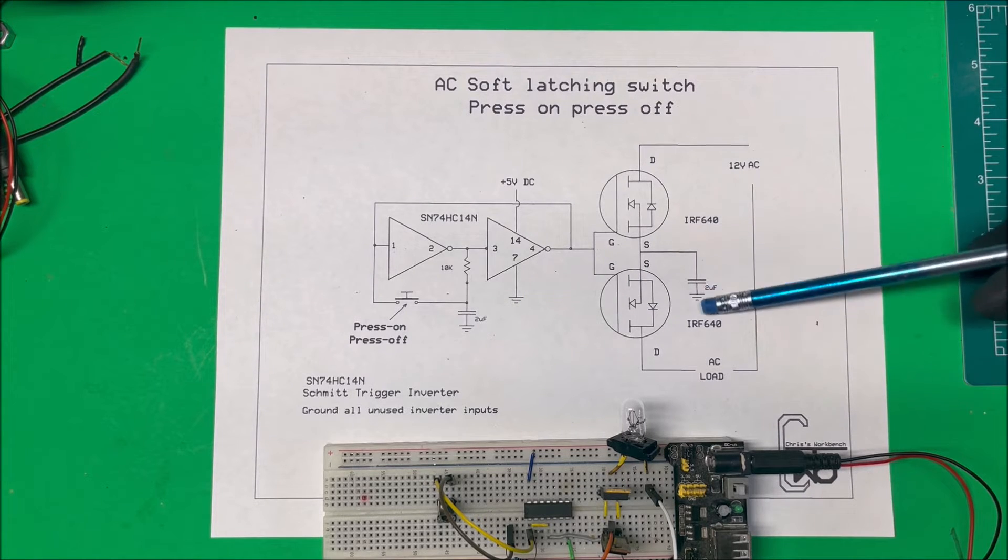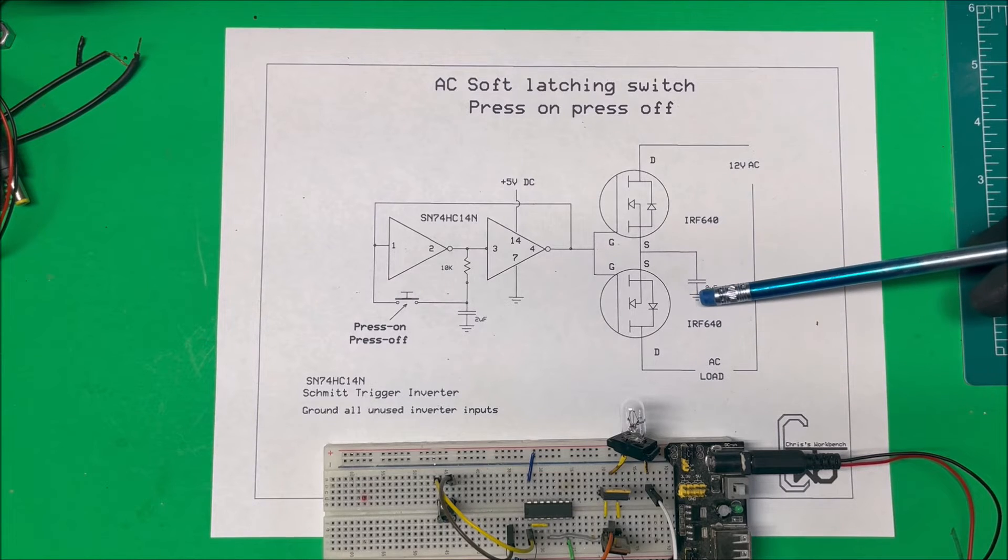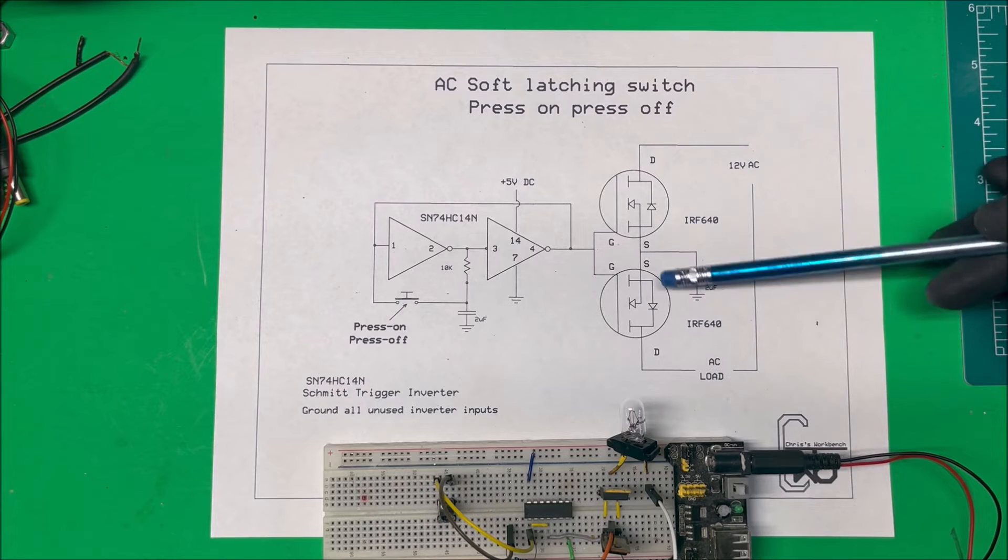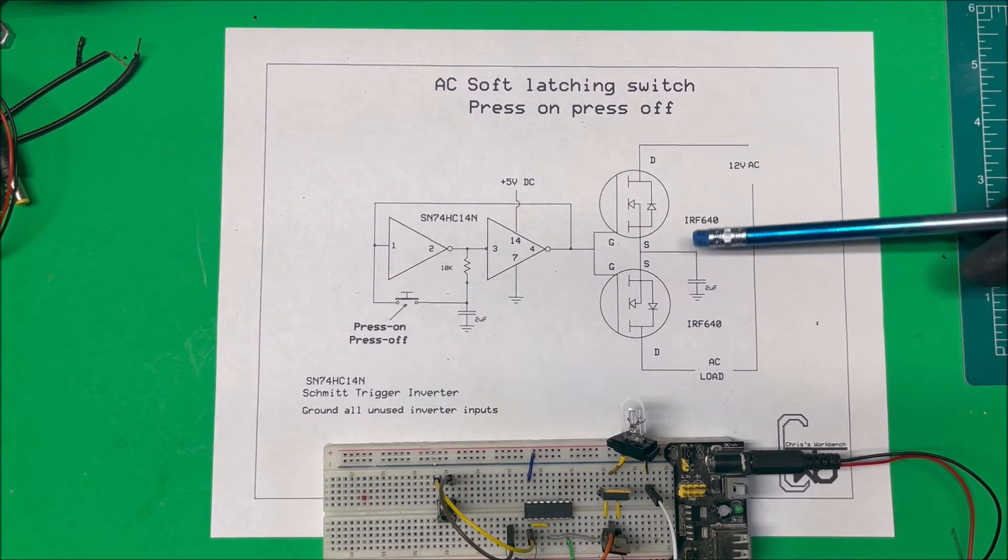Now you can just take this straight to ground but I'm just running it through the capacitor. It might be a little safer, but you can just tie that straight to ground. But as this is only 12 volts AC, so that's how it works.